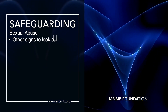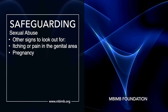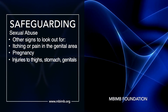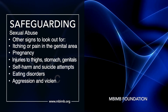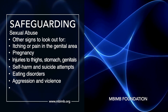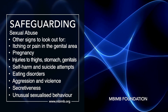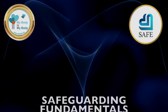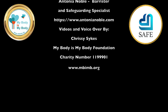Other signs to look out for include physical signs such as itching or pain in the genital area, pregnancy, injuries for example to thighs, stomach or genitals, self-harm and suicide attempts, eating disorders, aggression and violence, secretiveness, and unusual sexualised behaviour or knowledge for a child of that age.